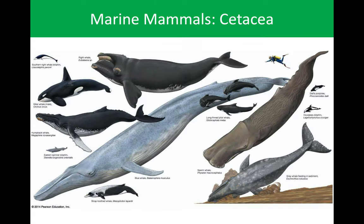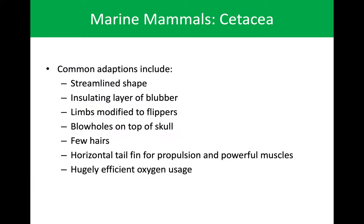Finally we'll move on to our whales. Here's a size comparison with a diver and all these different whales. Some common themes among all whales are the streamlined shape, an insulating layer of blubber, limbs modified to flippers — these are creatures that came off land and back into the ocean. Blowholes on top of the skull, few to no hairs, and a horizontal tail fin for propulsion. They're also very efficient at oxygen usage. Our lungs process less than 10% of every breath, while a whale's lungs can process almost up to 70%.